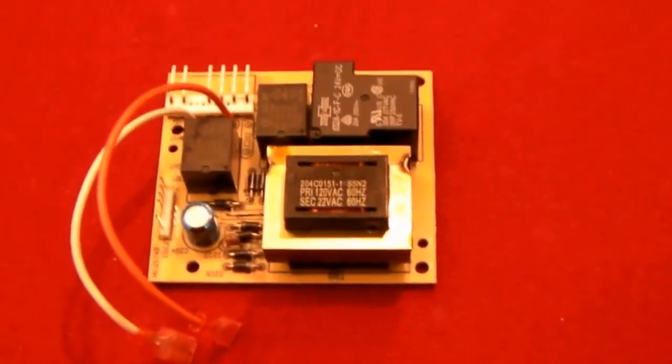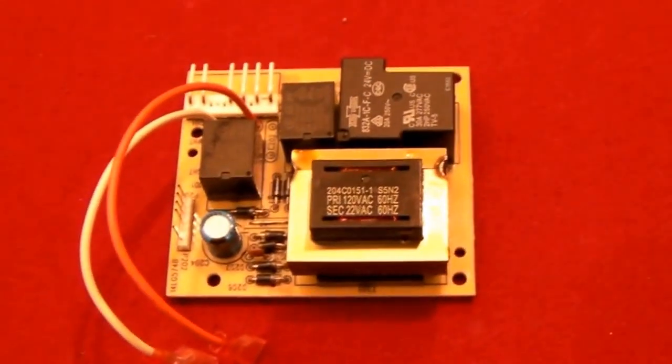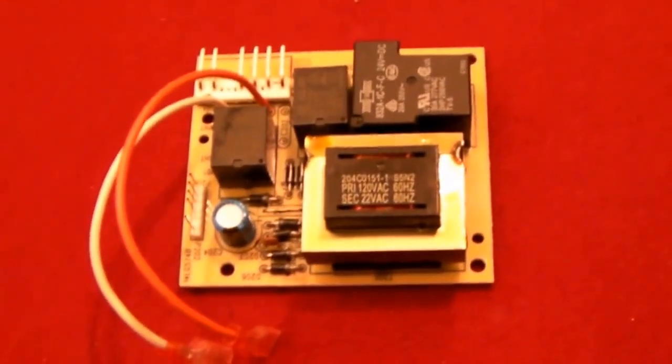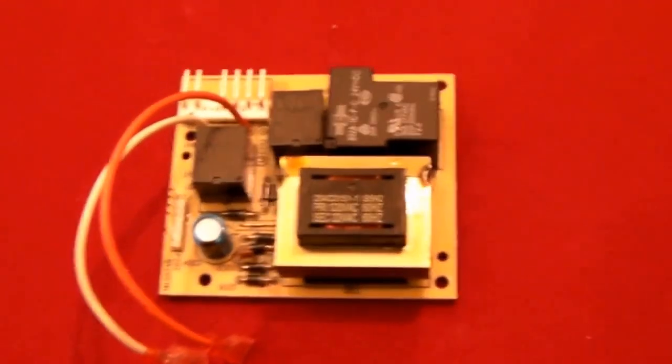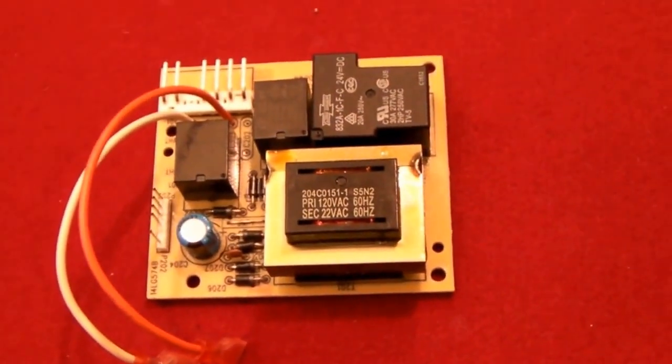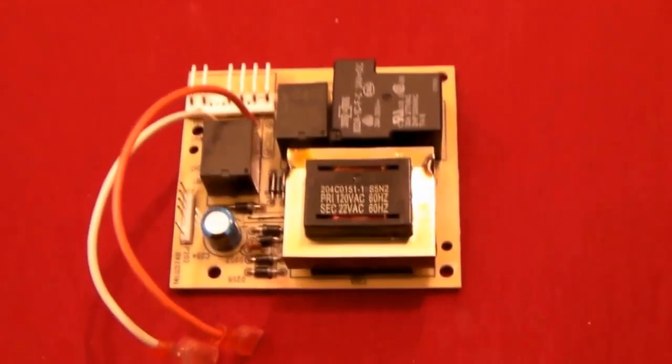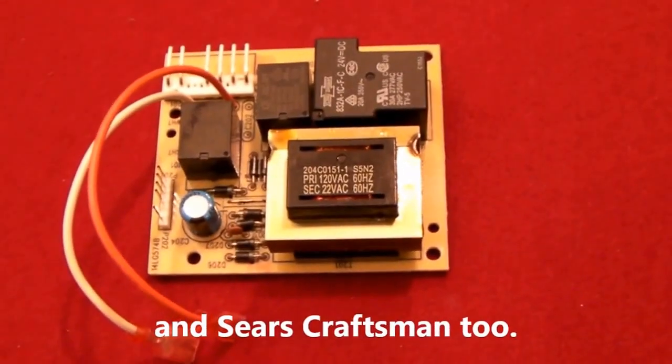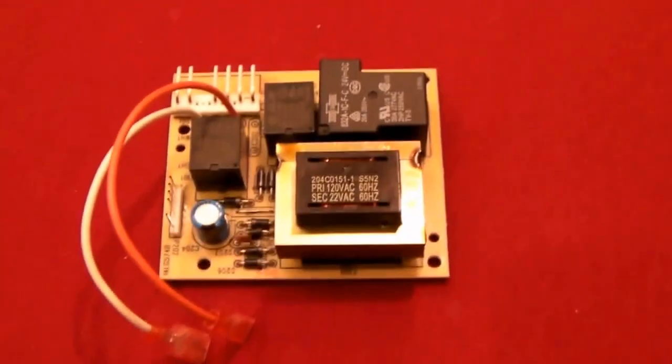So we decided to do a little bit of troubleshooting on it, and because we have good control boards and good power supplies, in this particular case, this was a Rayner unit, but it's the same guts as used in a lot of Liftmasters, Chamberlain, Rayner, a whole bunch of other different brands. The internal guts are all exactly the same.